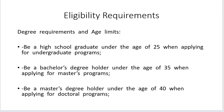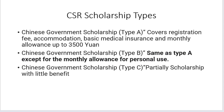These are the eligibility criteria for the Chinese government scholarship. There are three types of CSC scholarship: Type A, Type B, and Type C. I always recommend Type A because it's a prestigious scholarship — it covers your registration fee, accommodation, basic medical insurance, and monthly allowance up to 3500 yuan. Type B is the same as Type A except it doesn't provide the monthly allowance. Type C is a partial scholarship with only limited benefits.